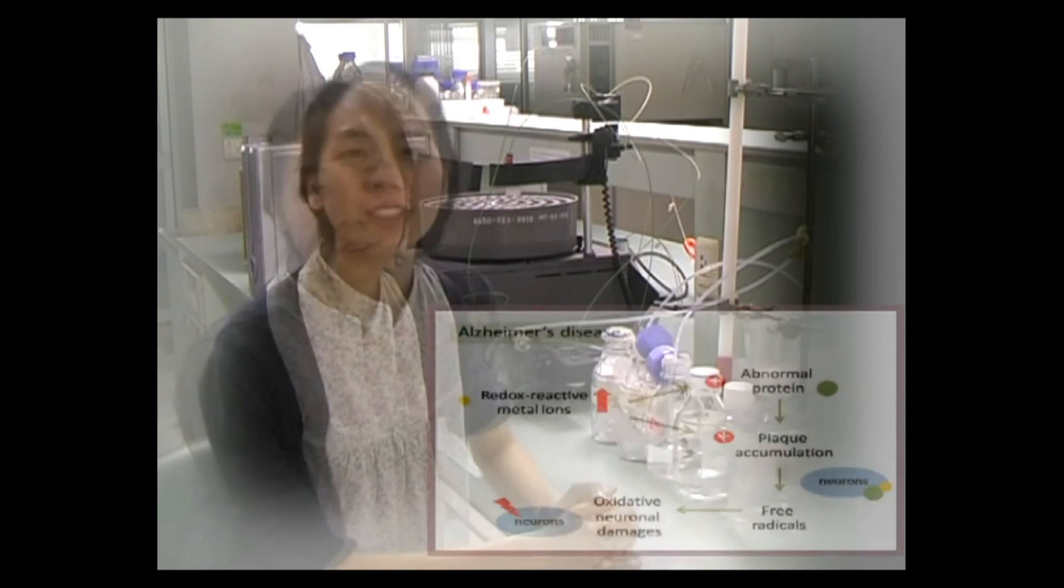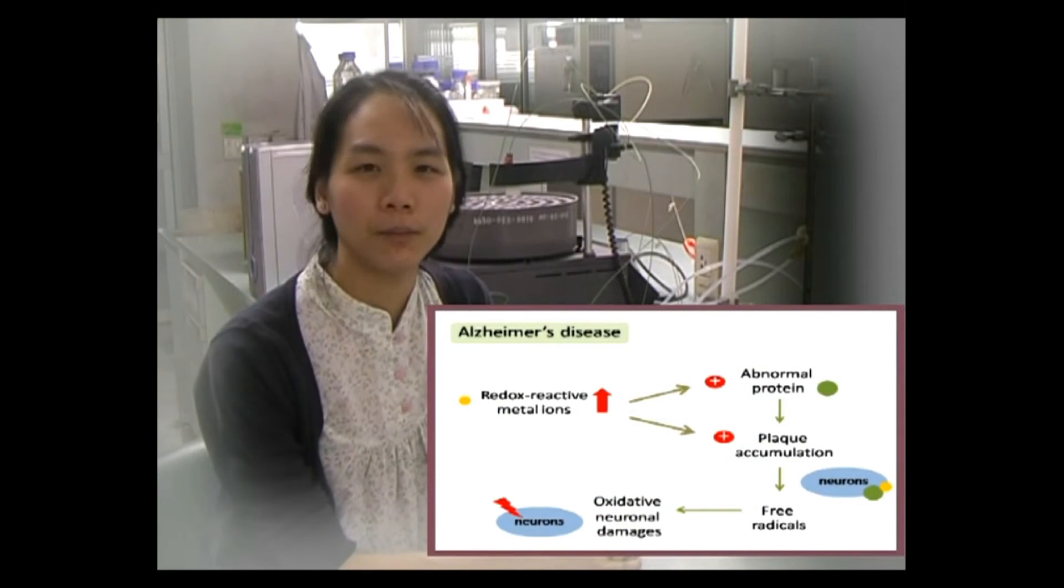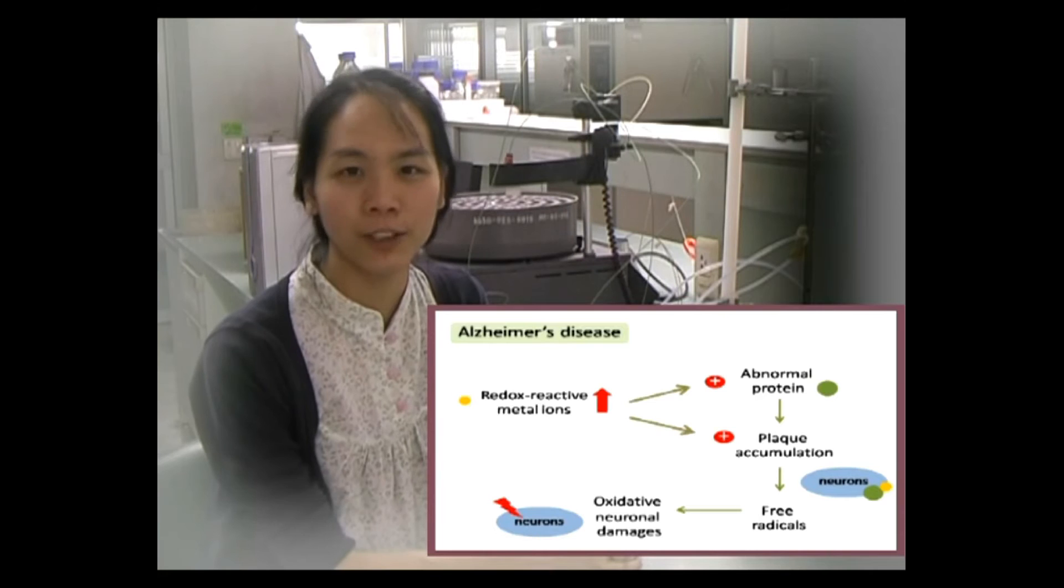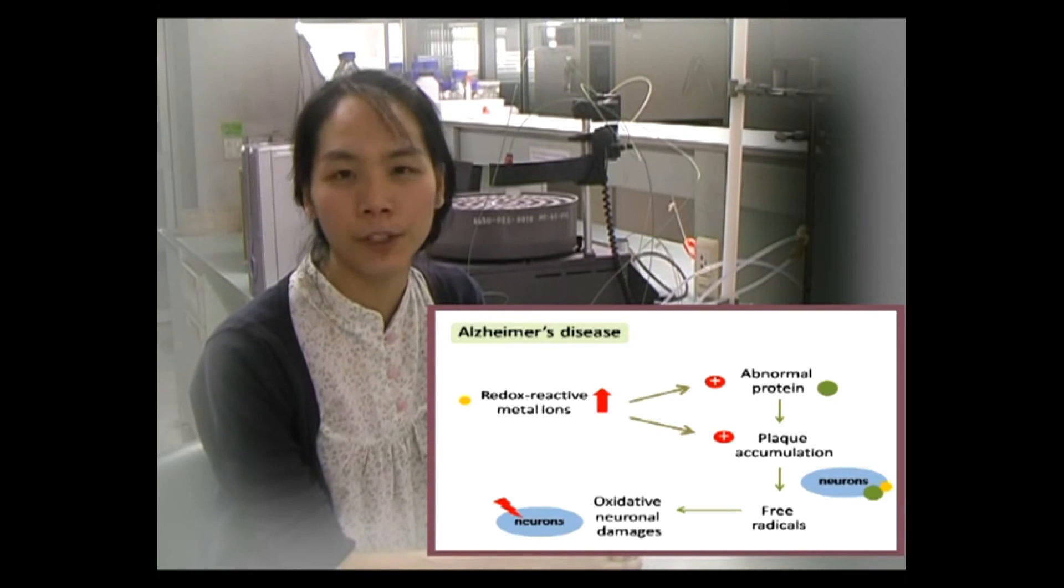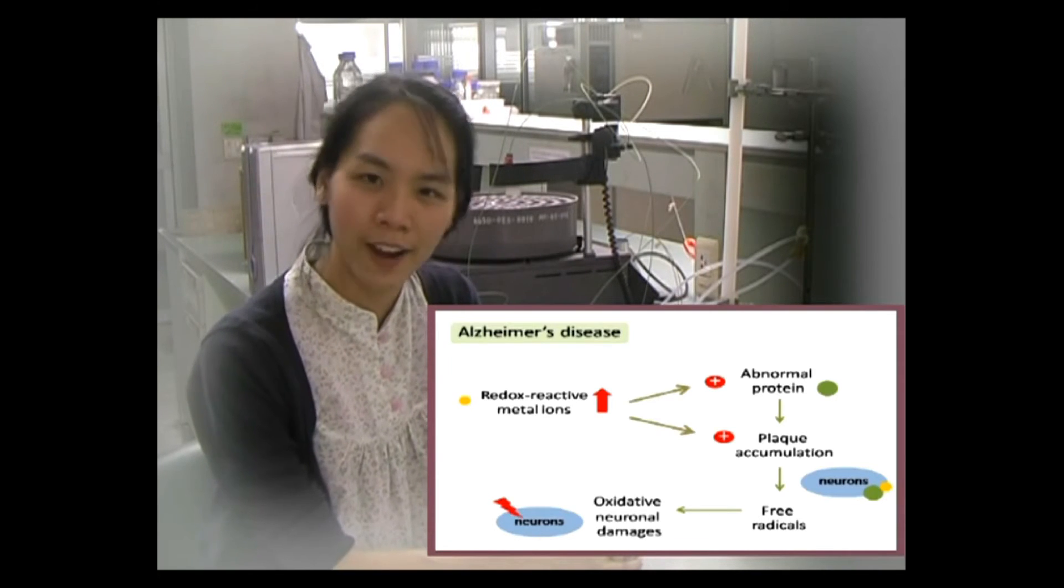In this video, I would like to give you an example how we can use A-Hydroxyquinolene to treat Alzheimer's disease. Relatively high levels of particularly redox-reactive metal ions are found in the brain of Alzheimer's patients, leading to loss of metal homeostasis in the brain.